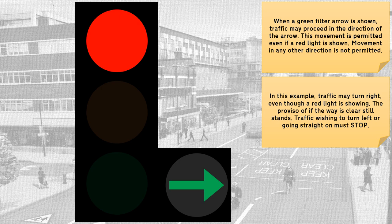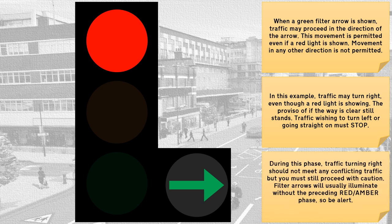In this example, traffic may turn right even though a red light is showing — the proviso of 'if the way is clear' still stands. Traffic wishing to turn left or going straight on must stop. During this phase, traffic turning right should not meet any conflicting traffic, but you must still proceed with caution.